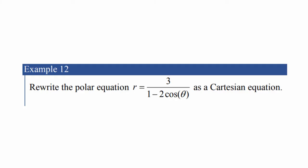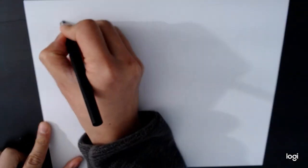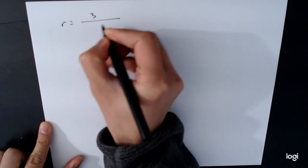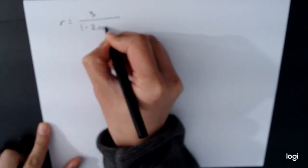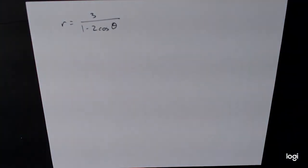Rewrite the polar equation r equals 3 over 1 minus 2 cosine theta as a rectangular equation. Now this is a little bit more confusing because you don't have as obvious of a starting point as you did with the other one.